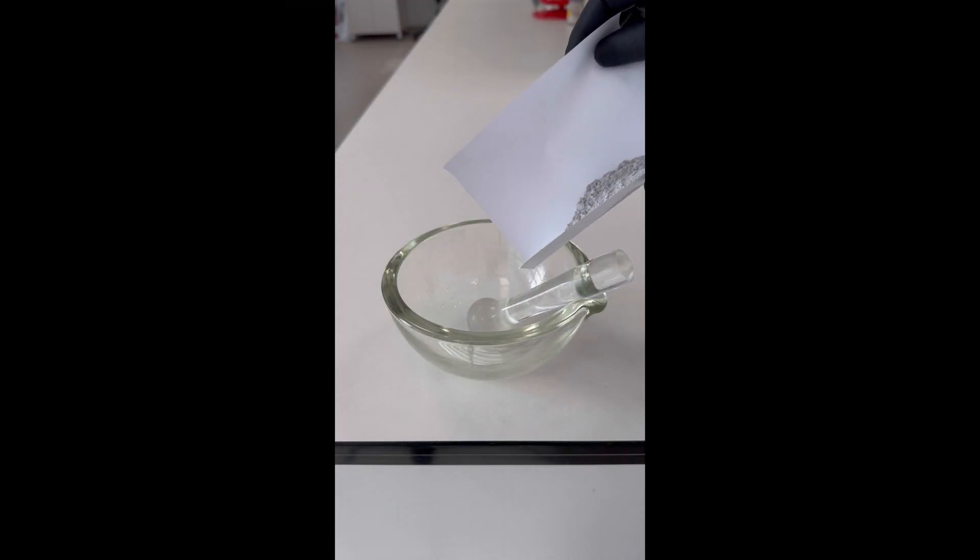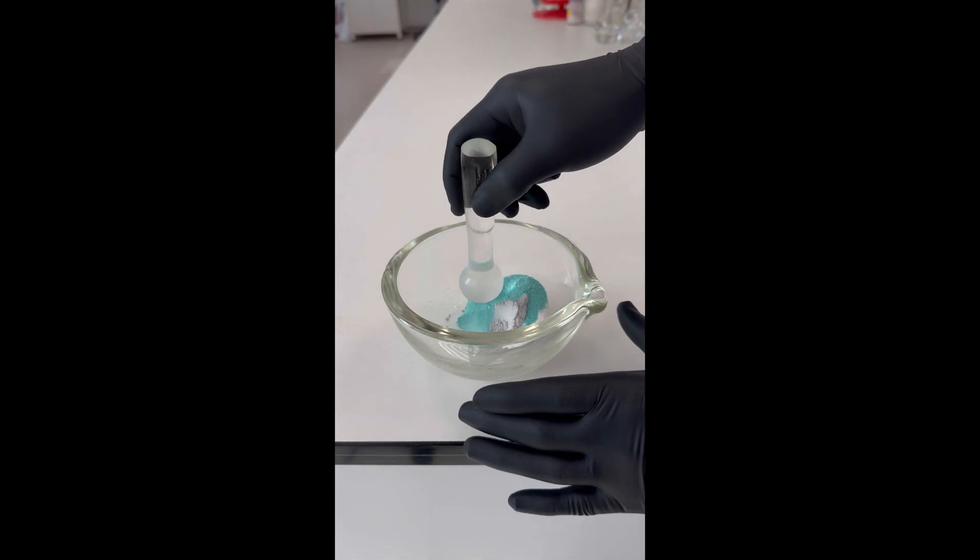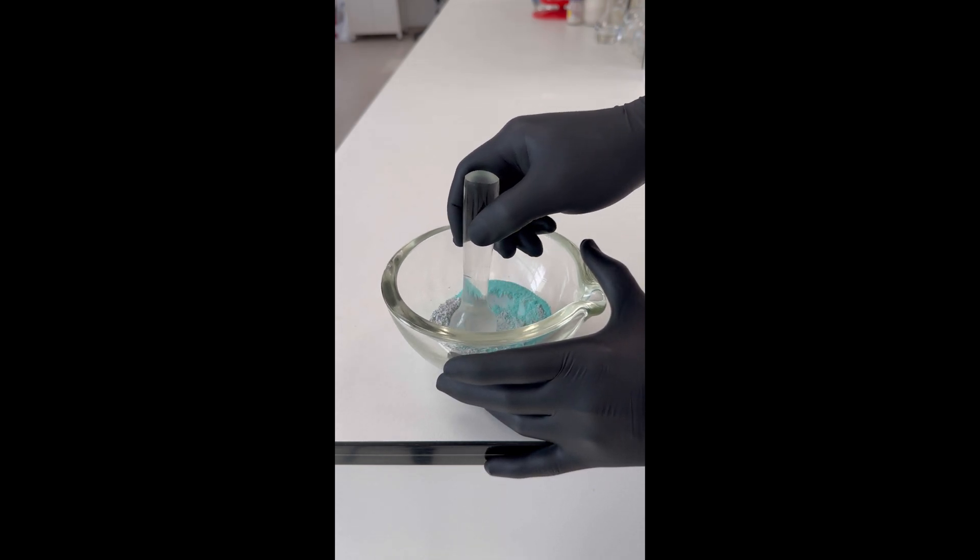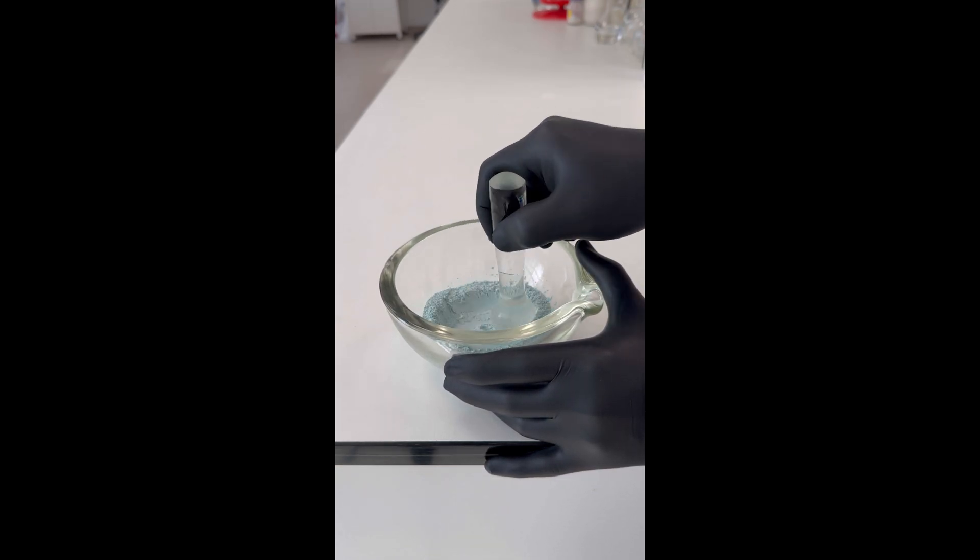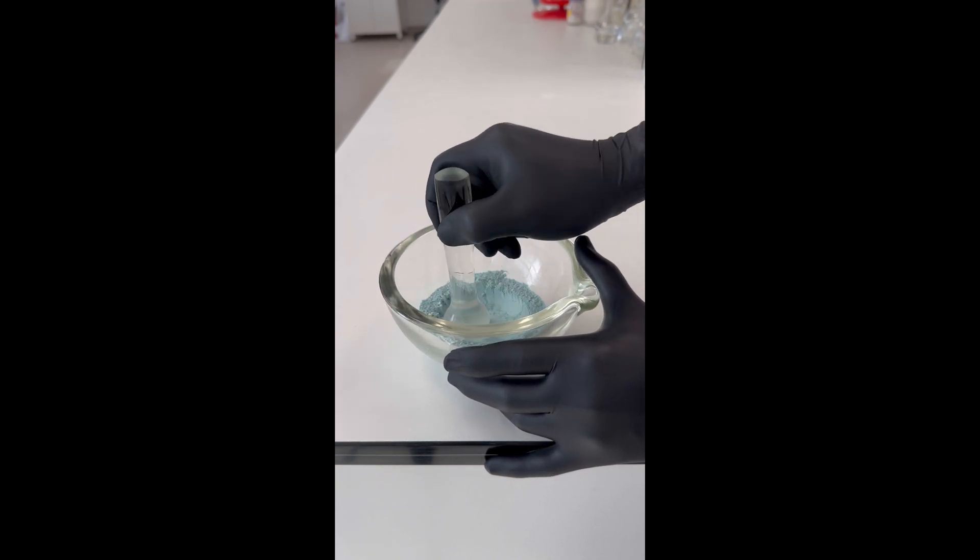In a glass mortar, we combine 13.2 grams of finely ground silica sand, 5.5 grams of calcium carbonate, and 6 grams of the dry basic copper carbonate. We homogenize the mixture to ensure proper reaction between the components.